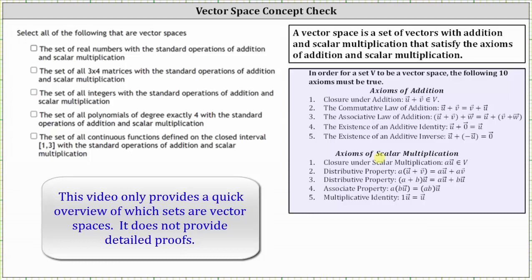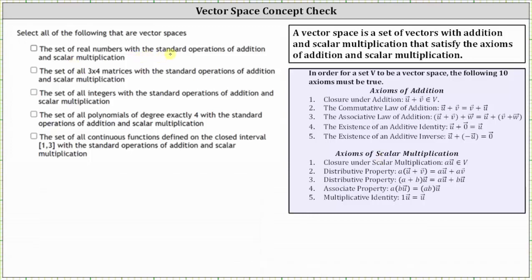In this example we're asked to select all the following that are vector spaces. First we have the set of real numbers with the standard operations of addition and scalar multiplication. To see if this set is a vector space we need to verify all five axioms of addition and all five axioms of scalar multiplication. If we replace vectors u and v with real numbers, these axioms remind us of properties of real numbers. For example, the sum of two real numbers is equal to another real number, and therefore we have closure under addition.